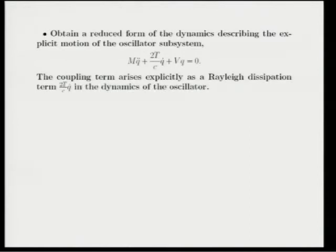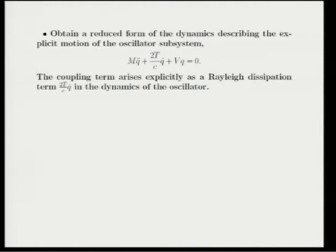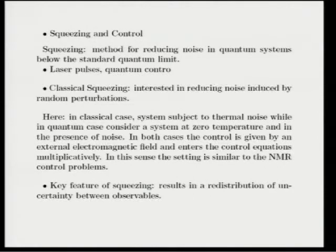Our motivation was actually looking at stability of systems — gyroscopically stable systems with oscillations, interested in what happens when you add dissipation and whether the system remains stable or unstable. But here I want to talk about how this dissipation model relates to quantum systems, and in particular to the problem of squeezing and control. The idea in squeezing is reducing noise due to random perturbations. In the classical setting you have a system with thermal noise; in the quantum case, zero temperature but quantum fluctuations. The control is again given by an electromagnetic field, and squeezing essentially reduces the distribution of uncertainty between variables in the system.